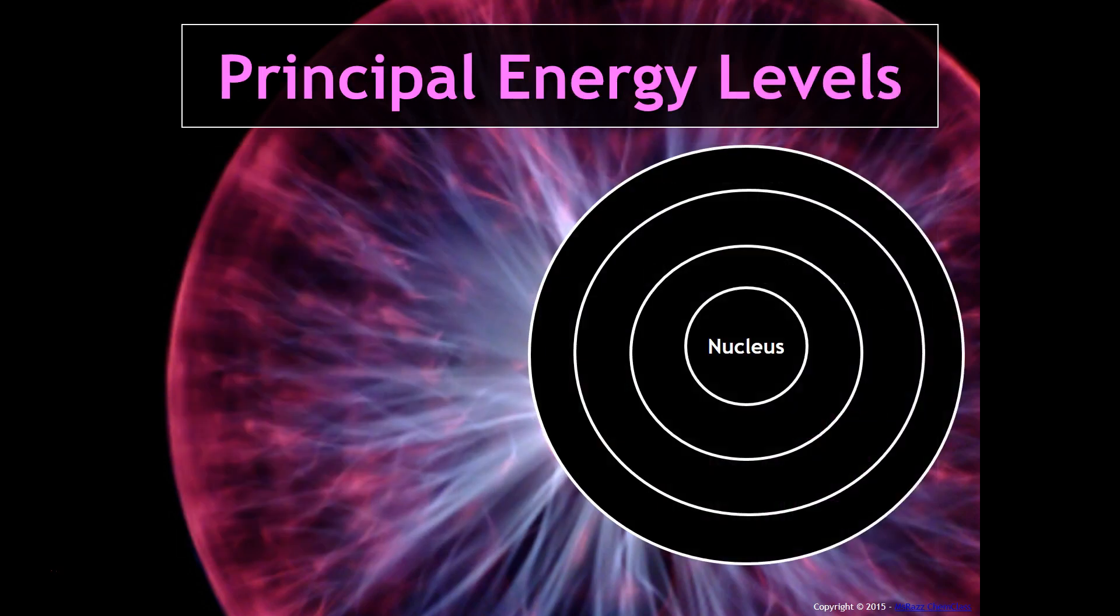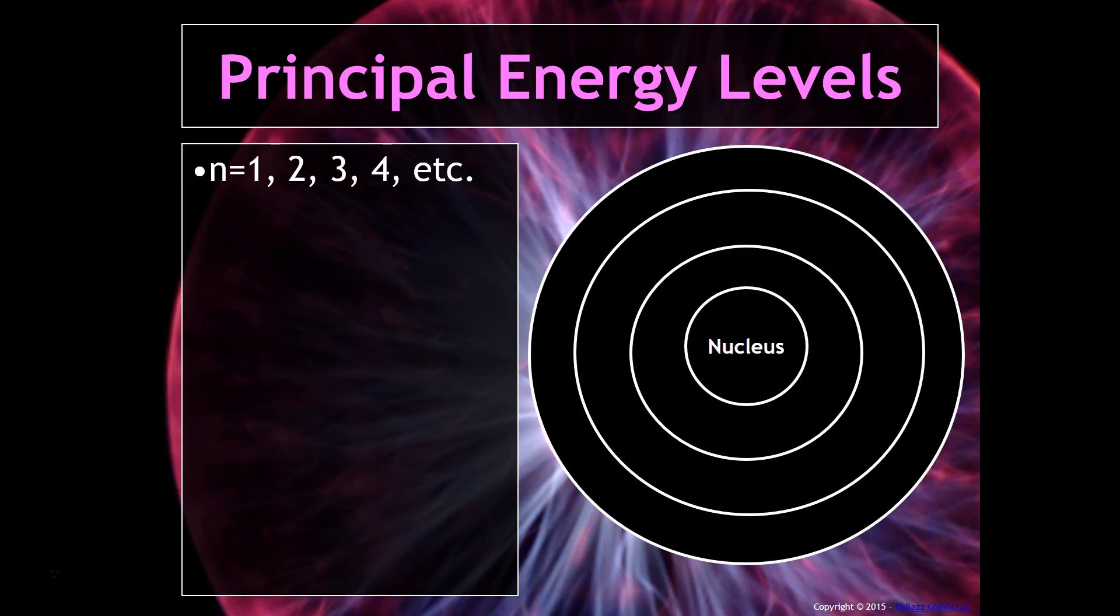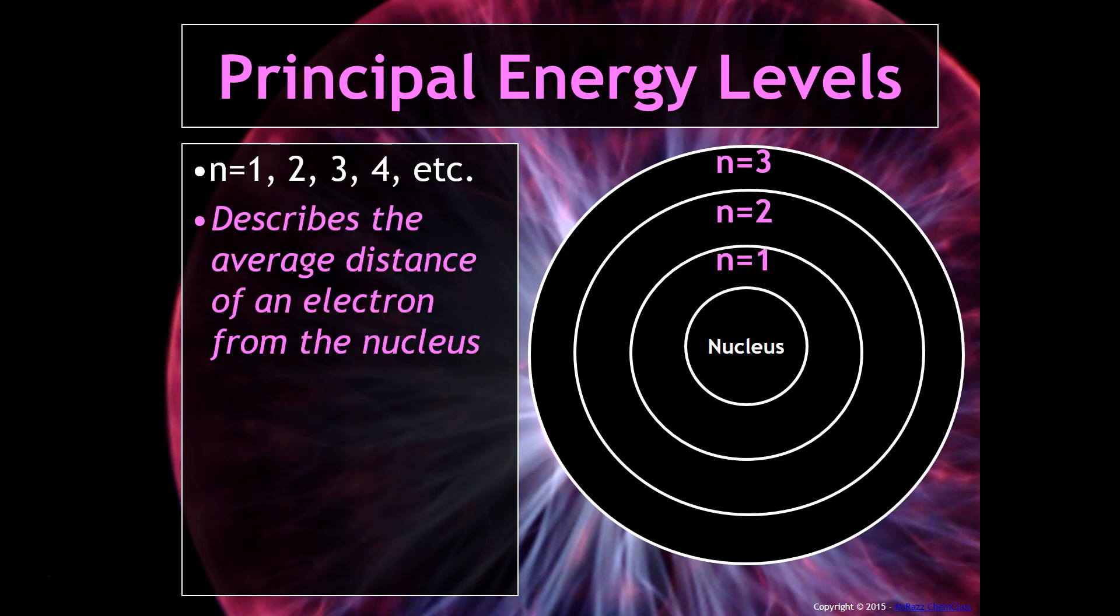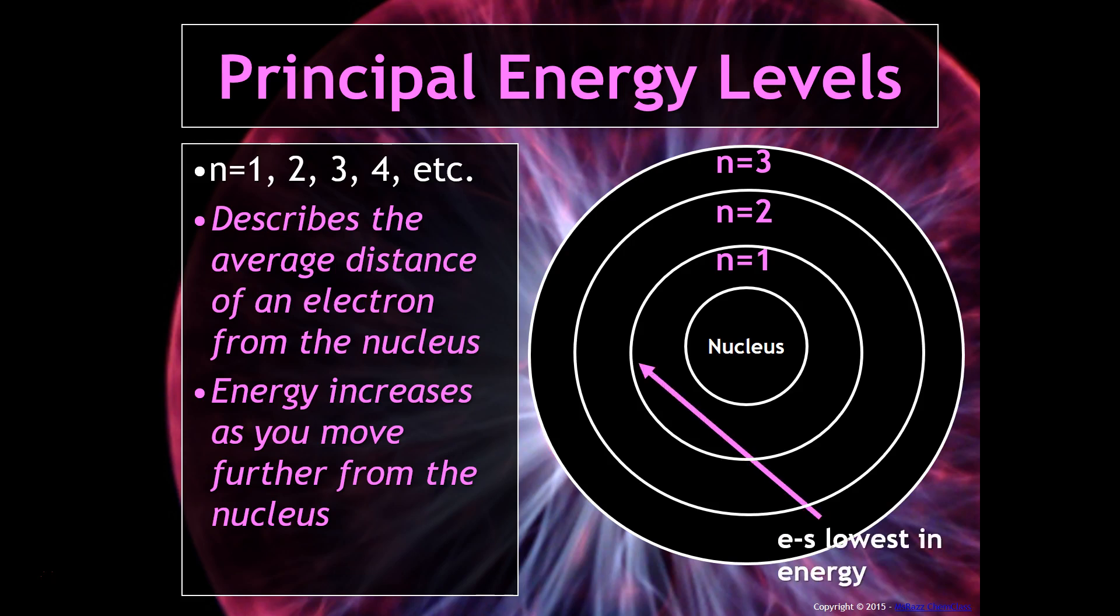This picture might look familiar. There is something called principal energy levels. Principal energy levels have whole numbers associated with them. These are the distances at which electrons can be located in an atom. As you move away from the atom, energy will increase. Electrons that are closest to the nucleus are lowest in potential energy, and electrons furthest away are highest in potential energy.